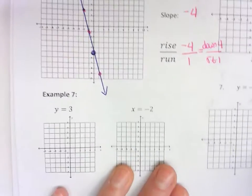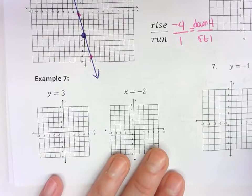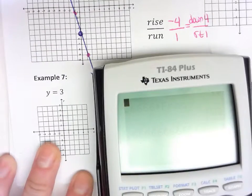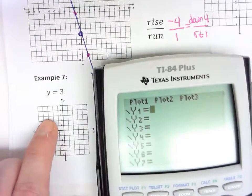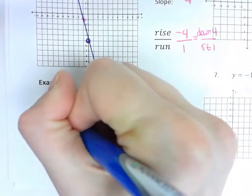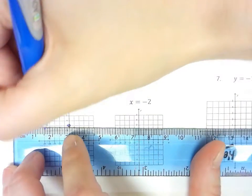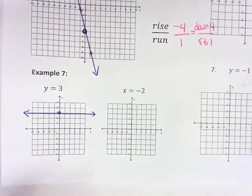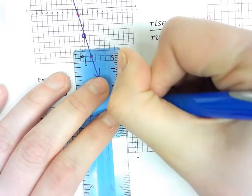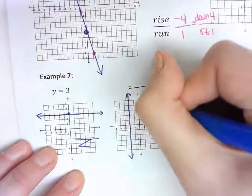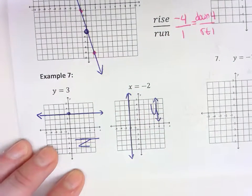The last two problems are new for today — one has a zero slope and one has an undefined slope. If you can't remember which is which, use the y-equals button in your calculator. Type in y equals 3 — that's a flat horizontal line that goes through positive 3 on the y-axis. So y-equals gives a horizontal line, meaning x-equals gives the vertical line. When you have a flat line, that is a zero slope. When the line goes straight up and down, that slope is undefined.